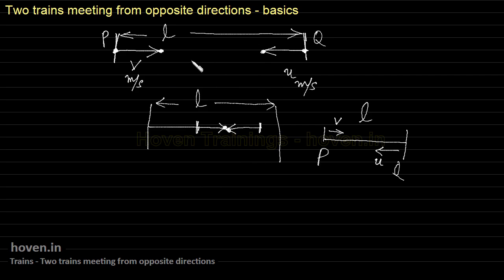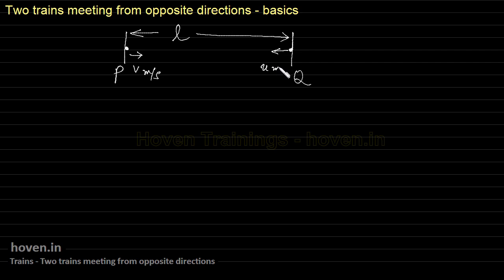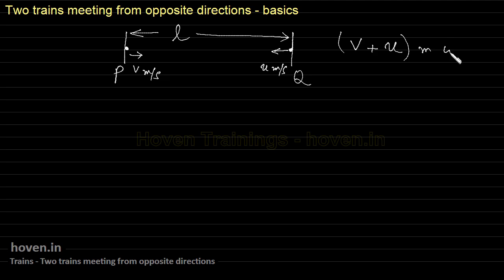Now I will draw the diagram neatly. This is P and this is Q. One dot starts at P, the second dot starts at Q, and the distance between the two stations is L. The dot at P is travelling towards the right at V meters per second, and the dot at Q is travelling towards the left at U meters per second. In one second, the dot at P moves V meters to the right, and the dot at Q covers U meters to the left.